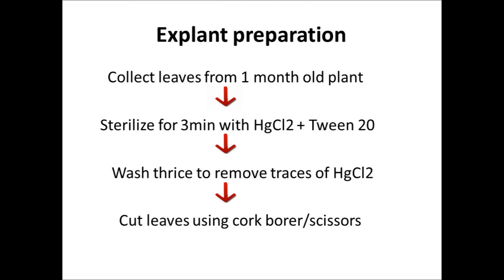Explant preparation: Collect leaves from a 1-month-old plant. They are then sterilized for 3 minutes with mercuric chloride and Tween 20, then washed thrice to remove traces of mercuric chloride. Then the leaves are cut using a cork borer or scissors.